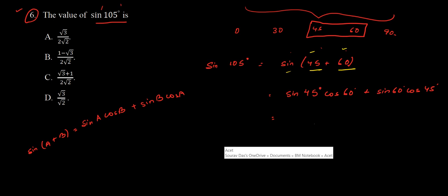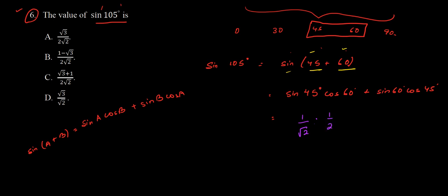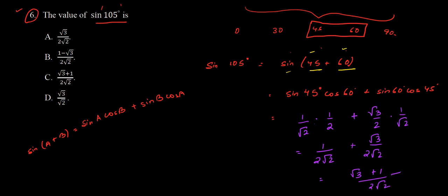Now substituting the values: sin(45°) = 1/√2, cos(60°) = 1/2, sin(60°) = √3/2, and cos(45°) = 1/√2. This gives us 1/(2√2) + √3/(2√2). Since the bases are common, we add the numerators to get (√3 + 1)/(2√2). Checking option C, we see (√3 + 1)/(2√2), so option C is the correct answer.